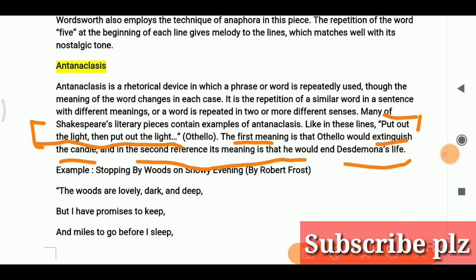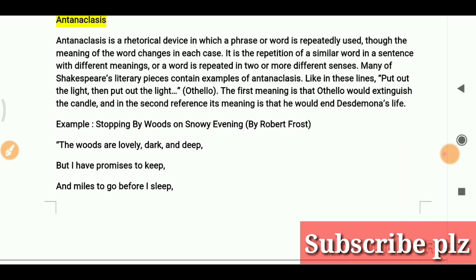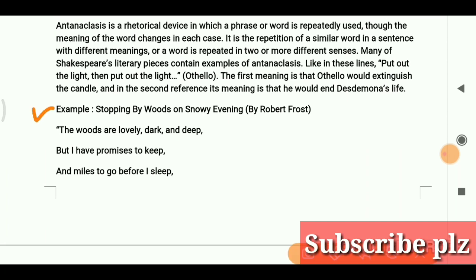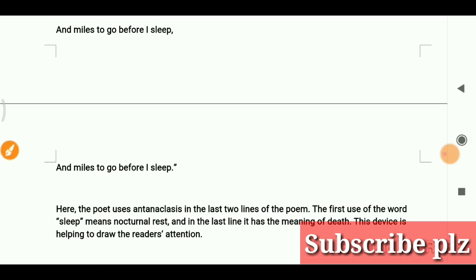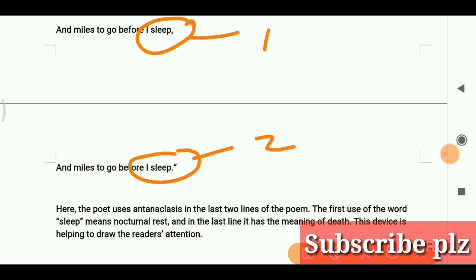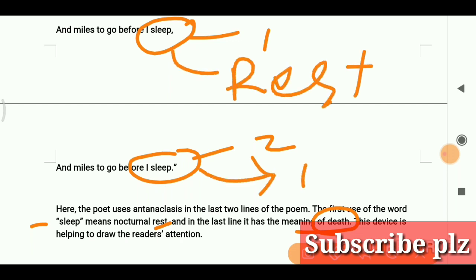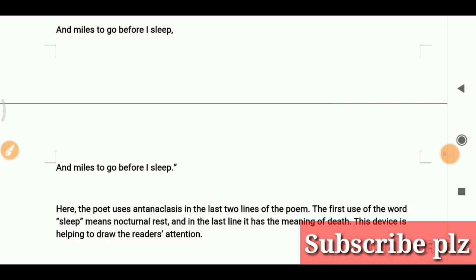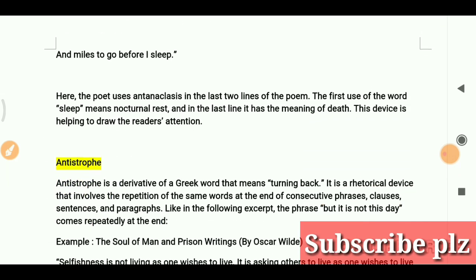Here a phrase is repeated twice and the second meaning is changed. Another example is 'Stopping by Woods on a Snowy Evening' by Robert Frost: 'the woods are lovely, dark and deep, but I have promises to keep, and miles to go before I sleep, and miles to go before I sleep.' The first 'sleep' means rest, and the second 'sleep' means death. This is antanaclasis.